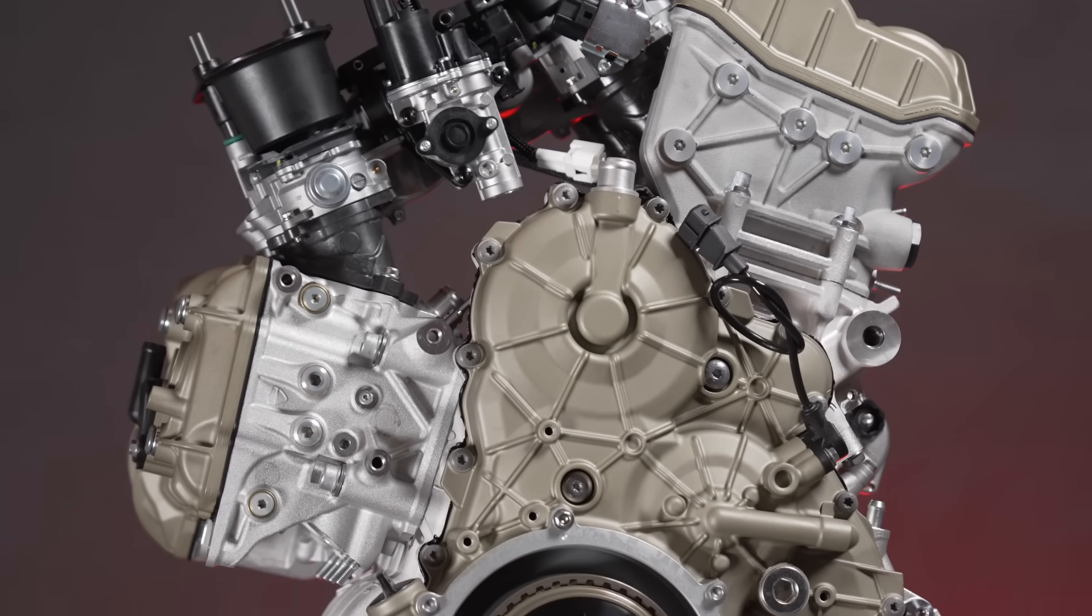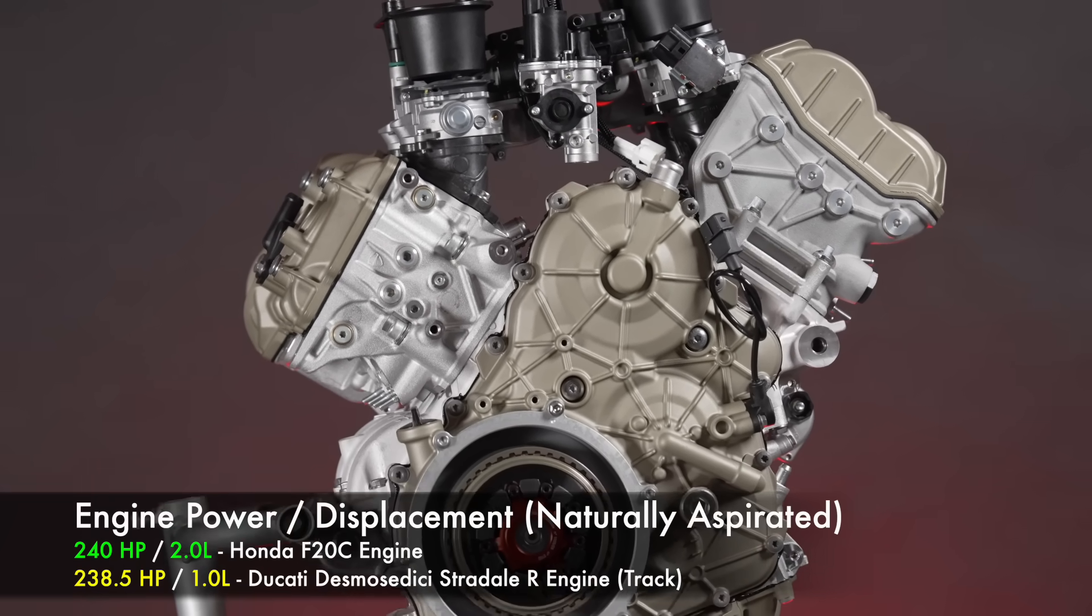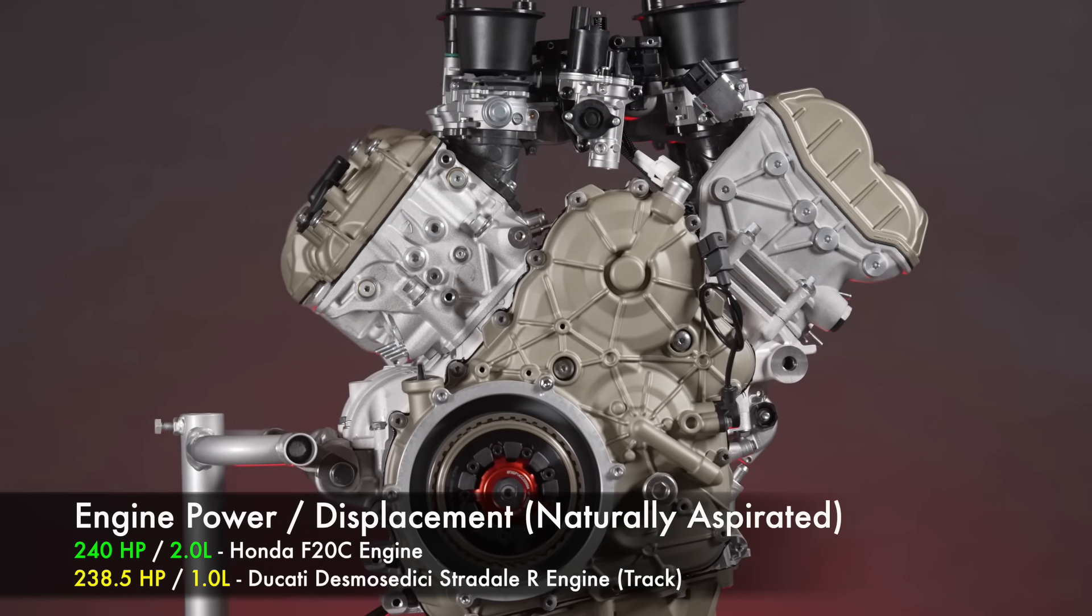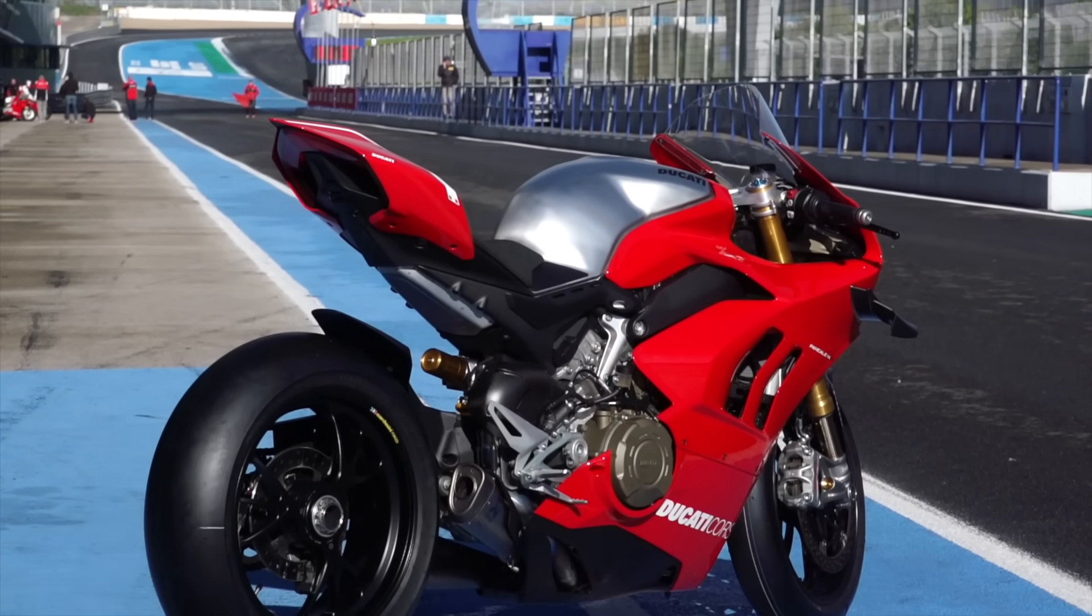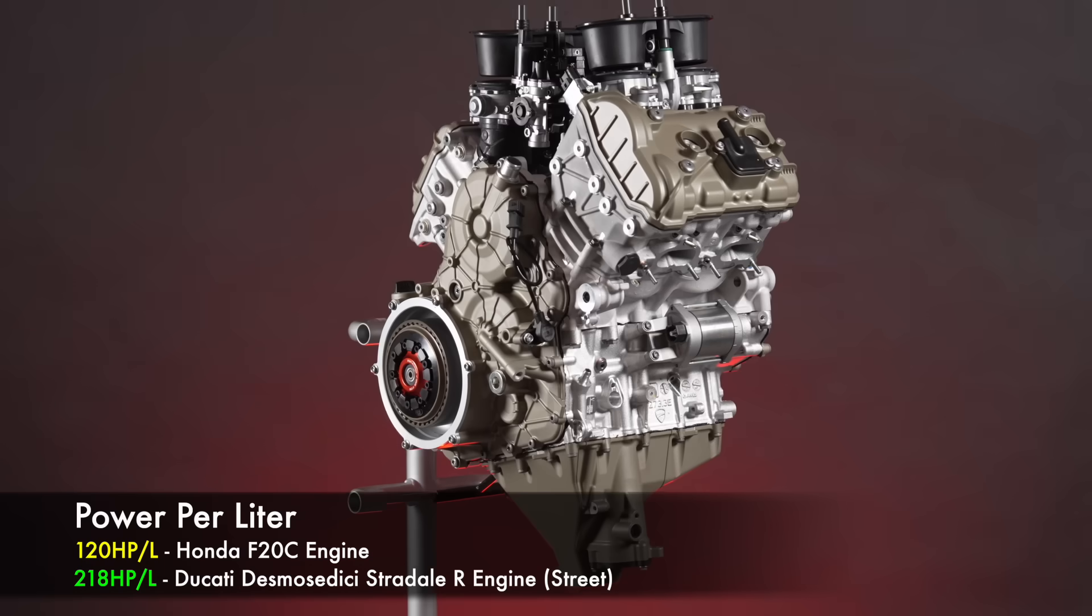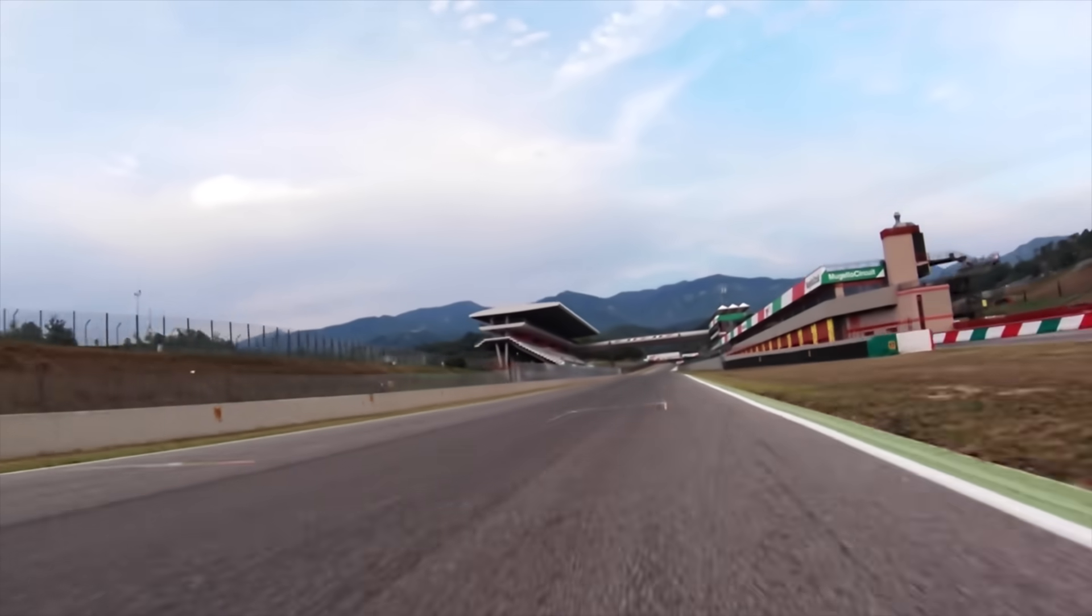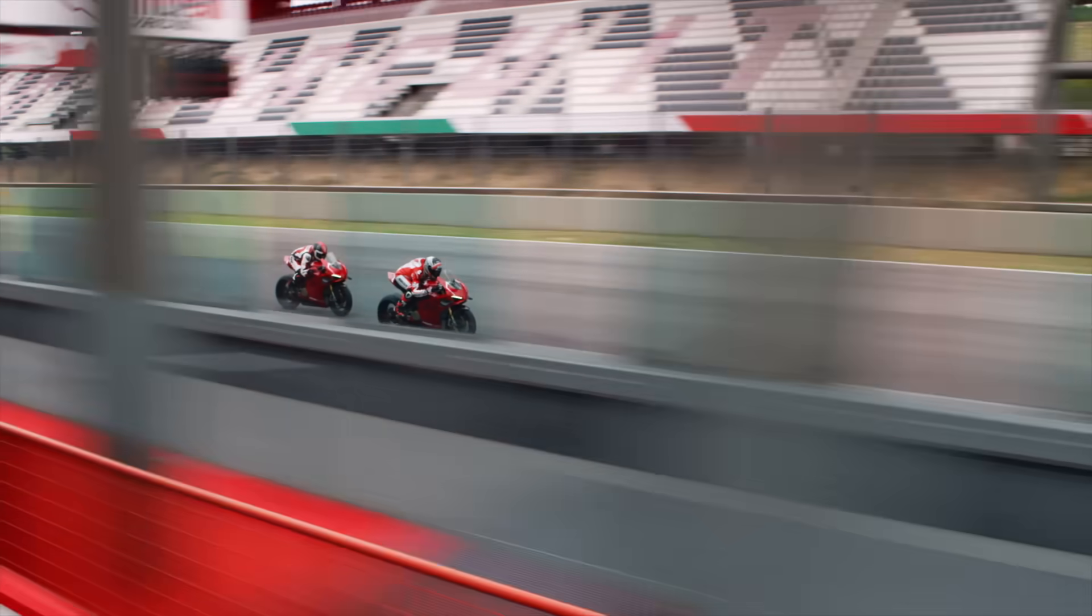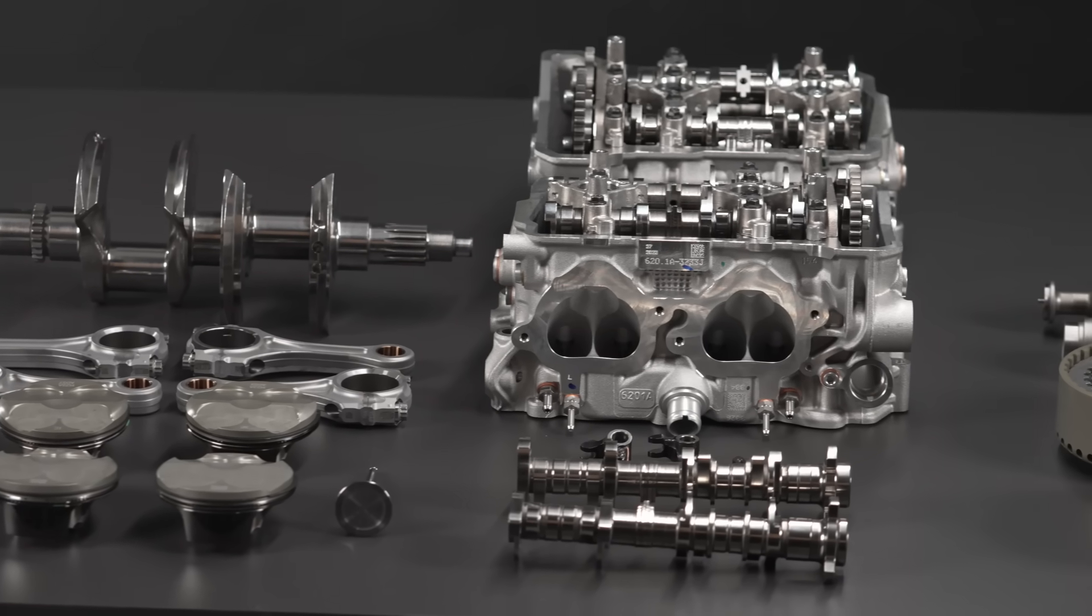And compare that to today, where Ducati's V4 engine can make nearly identical power to the S2000, but with just 1 liter. Half the size, albeit with a racing exhaust and special oil. But even in typical street legal form, it's making 218 horsepower per liter, nearly 100 horsepower more per liter than the S2000. Ducati's prowess has absolutely dominated MotoGP the past several years with their V4 engine, and this ridiculous engineering is available in a sport bike for us mortals.